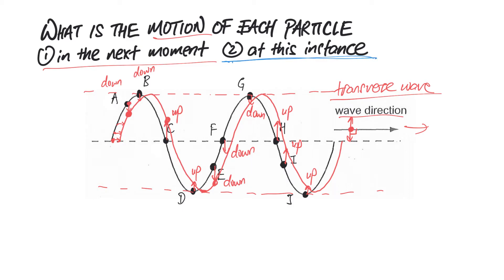For question two, what if it asks for the motion of all the particles at this particular instant? The technique is still the same — I still draw the new position of the wave in red. For most particles like A, C, E, F, H, and I, the answer is the same because they are in the process of moving up or down at that instant. So the technique remains identical.